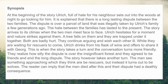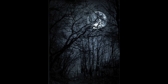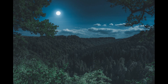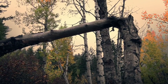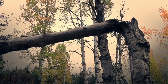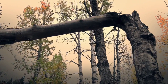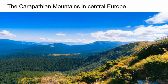At the beginning of the story, Ulrich, full of hate for his neighbor, sets out into the woods at night to go looking for him. There is a long-lasting dispute between the two families over a parcel of land that was illegally taken by Ulrich's family a few generations ago. The hate between the families has lasted to the present. The story arrives at its climax when the two men meet face to face. Ulrich hesitates for a moment, and nature strikes against them — a tree falls on them, and they are trapped under it together. Both are badly hurt. They continue arguing and wish each other ill. While waiting for rescuers, Ulrich drinks from his flask of wine and offers to share it with Georg. This is when the story takes a turn and the conversation becomes more friendly. They realize how silly the fight is over the insignificant forest, and they agree to be friends and end the long dispute.